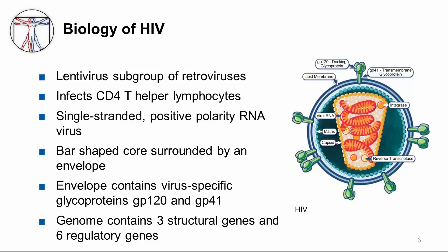HIV is a lentivirus in the group of retroviruses because it causes slow infection with a long incubation period. It is a retrovirus because the virus uses its own reverse transcriptase enzyme to produce DNA from RNA, which is the reverse of the usual pattern. This DNA is then integrated into the host cell genome, and the host cell treats the viral DNA as part of its own, making all the proteins needed for the virus.